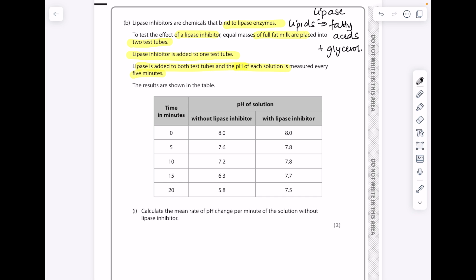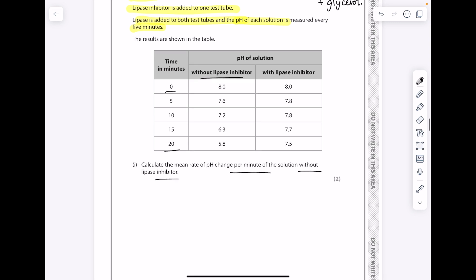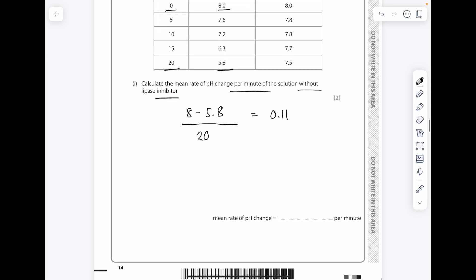Calculate the mean rate of pH change per minute of the solution without lipase inhibitor. We're looking along this column. Our experiment is carried out over 20 minutes. We want to look at the difference between these two values, divide it by the number of minutes to get a rate of pH change per minute to get 0.11 as our answer.